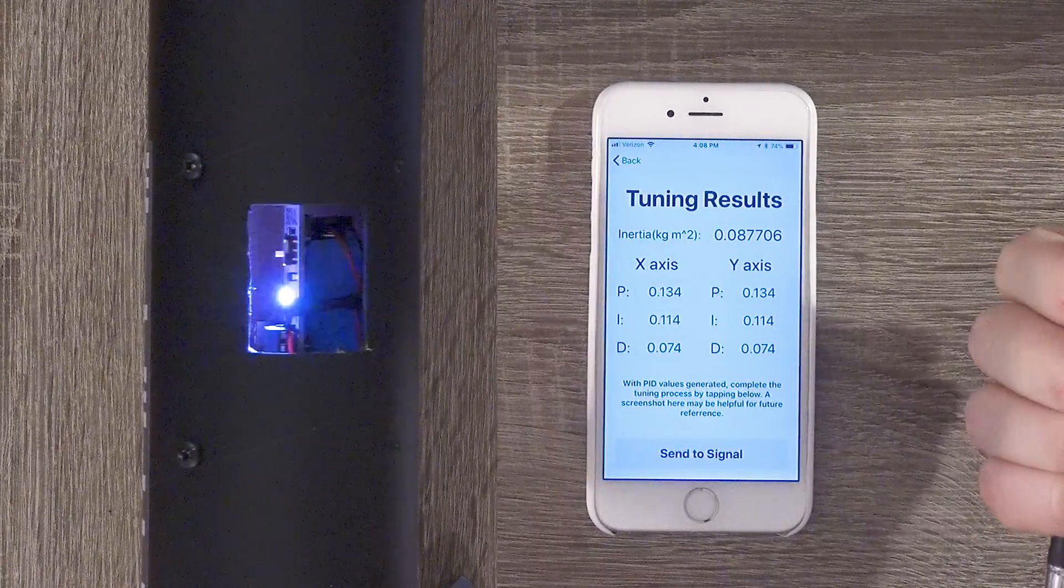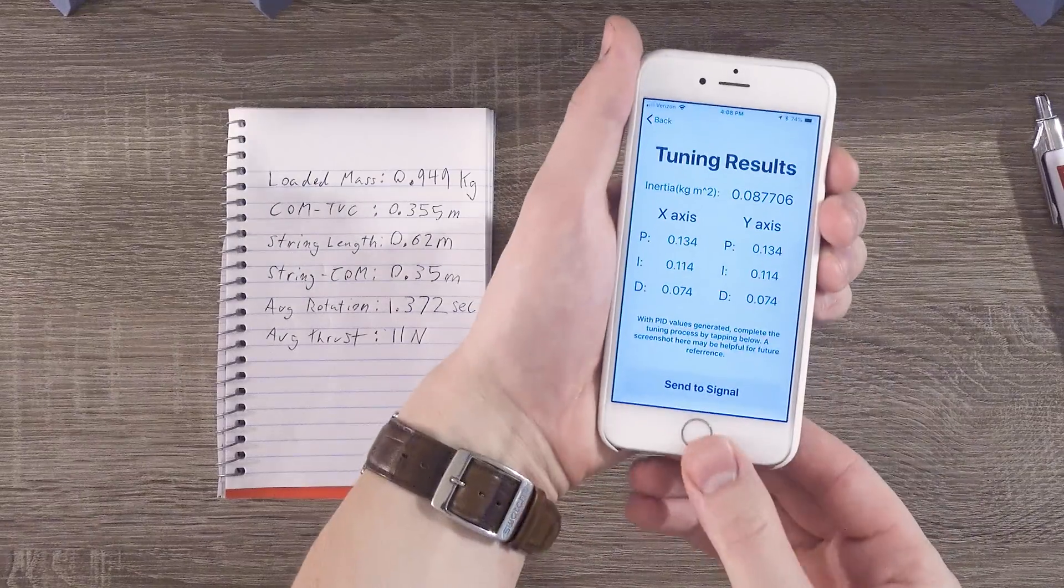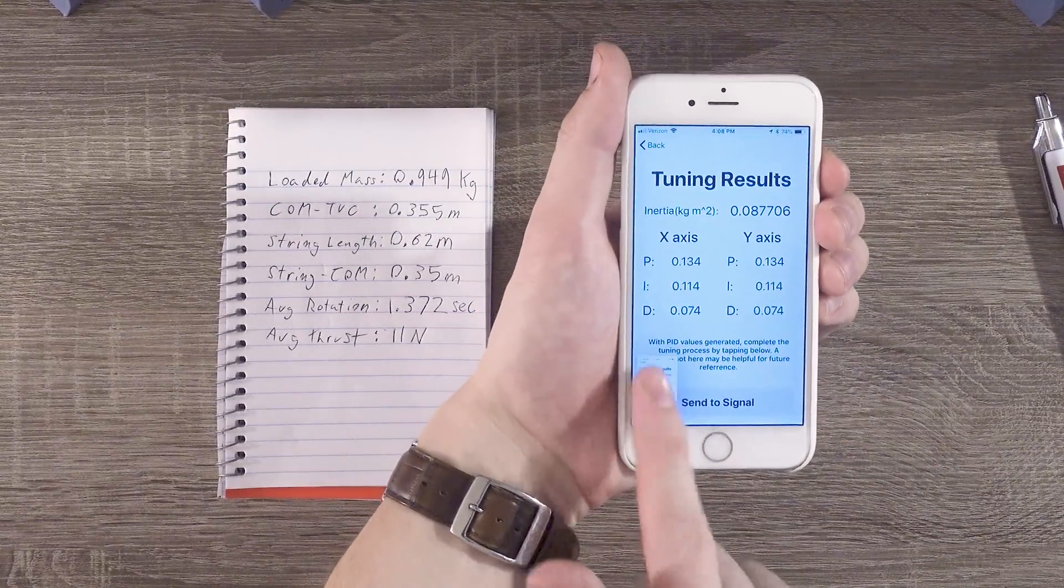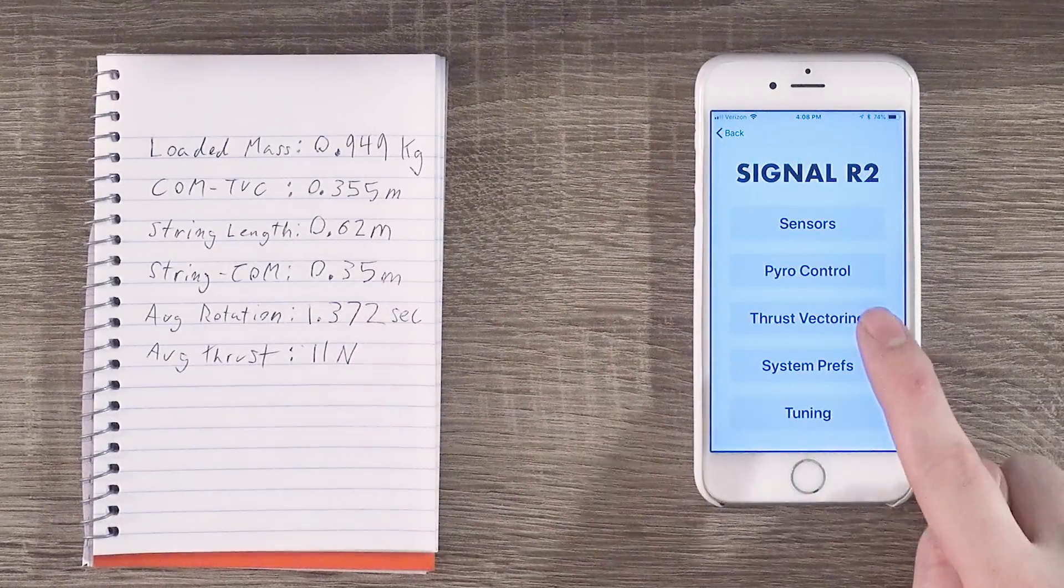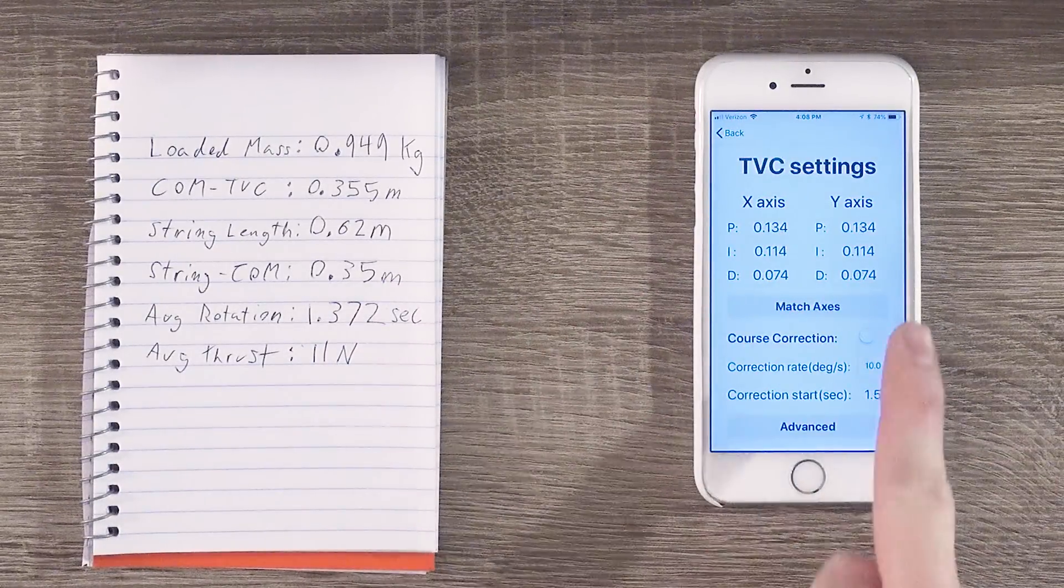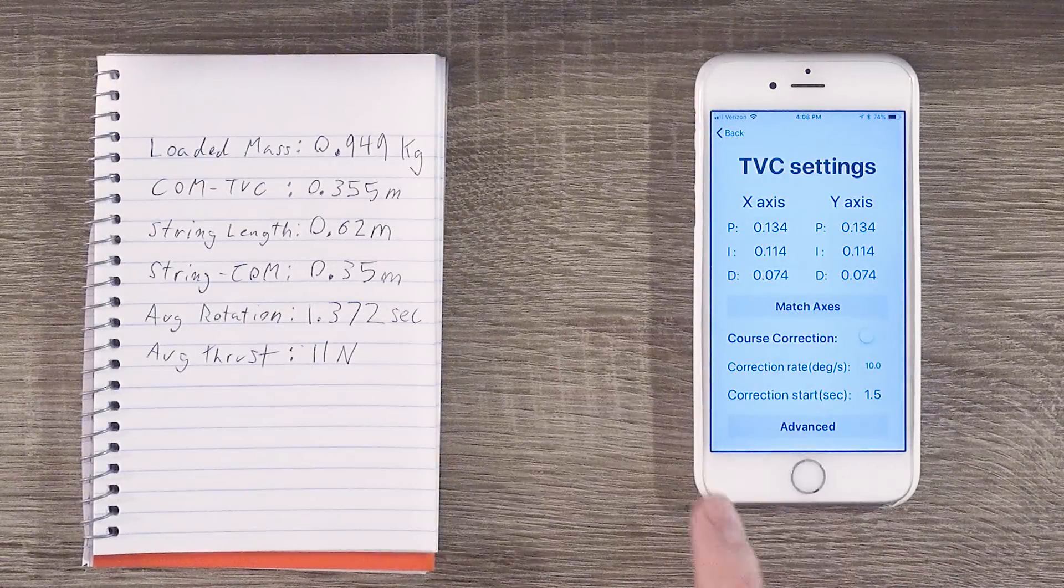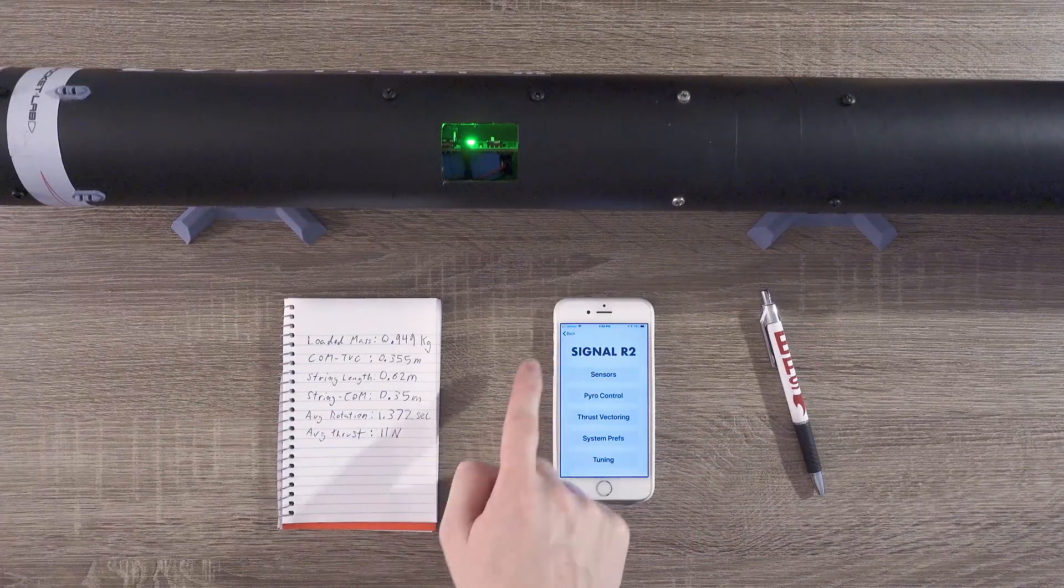Very nice! Looks like it worked! Before we leave this page, I'm going to take another screenshot just for reference. Then, we're going to back out of the tuning results page, back out of that page, go into the thrust vectoring page, and then double check that these PID values are the same ones that we just configured. They all look good to me, so we're ready to go.